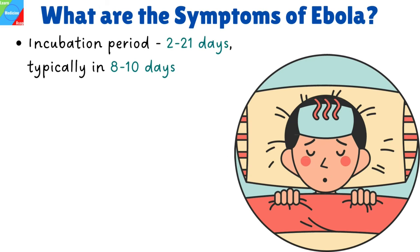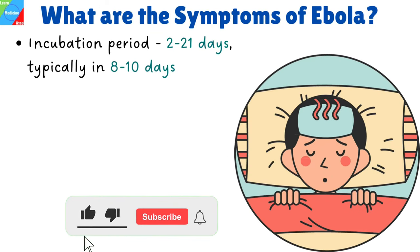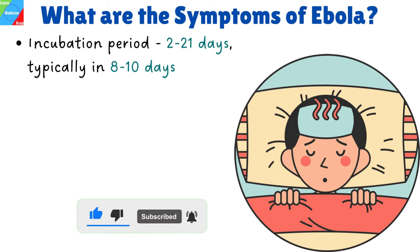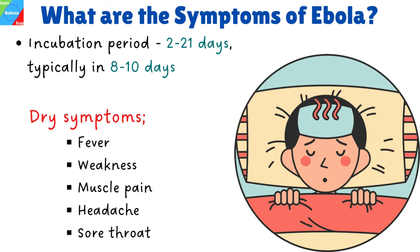What are the symptoms of Ebola? The incubation period — that is, the time interval from infection with the virus to onset of symptoms — is from 2 to 21 days, typically 8 to 10 days. Initially, the symptoms of Ebola are dry symptoms. This often begins with a sudden onset of fever, weakness, muscle pain, headache, and sore throat.